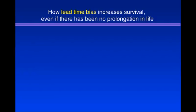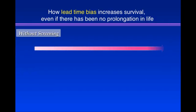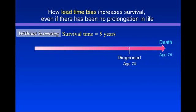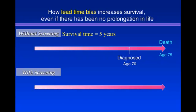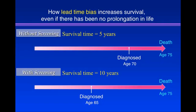Here's how lead time bias increases survival even if there's been no prolongation in life. Without screening: patient dies at 75, diagnosed at age 70 — survival time is 5 years. With screening: same patient, still dies at age 75, but diagnosed at age 65 — survival time is 10 years. But nothing's really changed. The patient is still dying at age 75. All that's changed is the time of diagnosis.